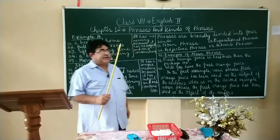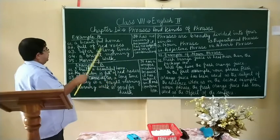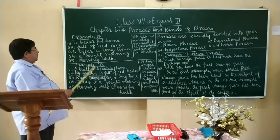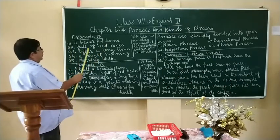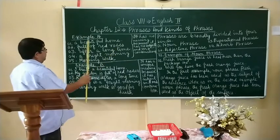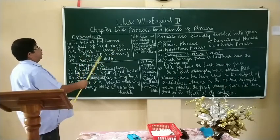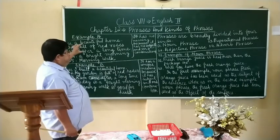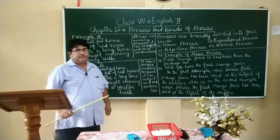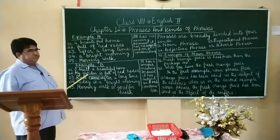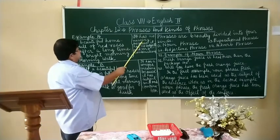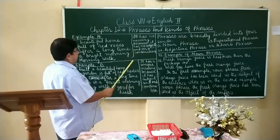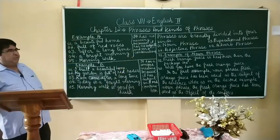Children, see the examples here. Two examples are given: Example A and Example B. A beautiful home full of red roses, after a long time, a bright morning, morning walk — this group of words makes sense but not complete sense, because it has no subject and verb combination.